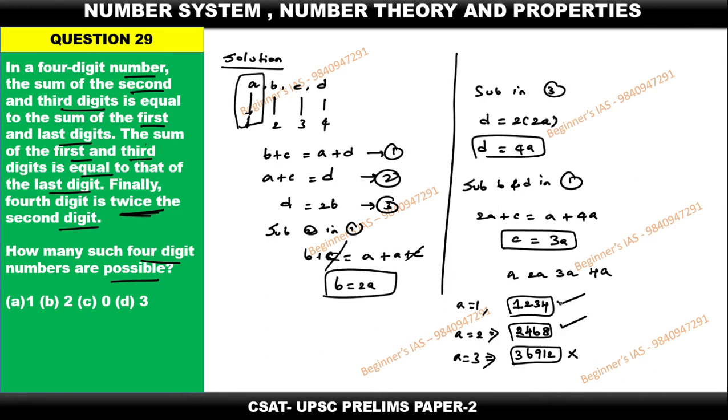Therefore how many 4 digit numbers can be formed? Only 2 options. Therefore the answer for this question is option number B. 2 is the answer. If you are having a doubt, please comment. I will clarify you. Thank you all. Have a good day.